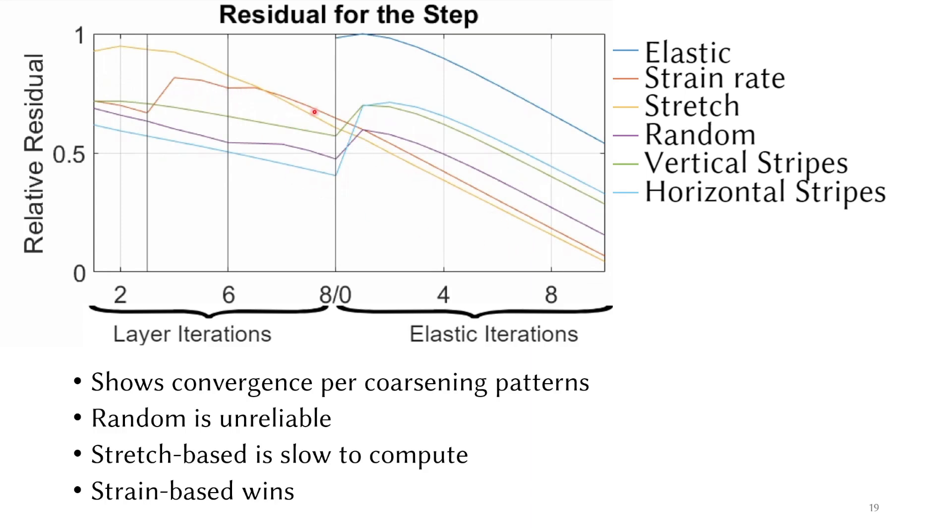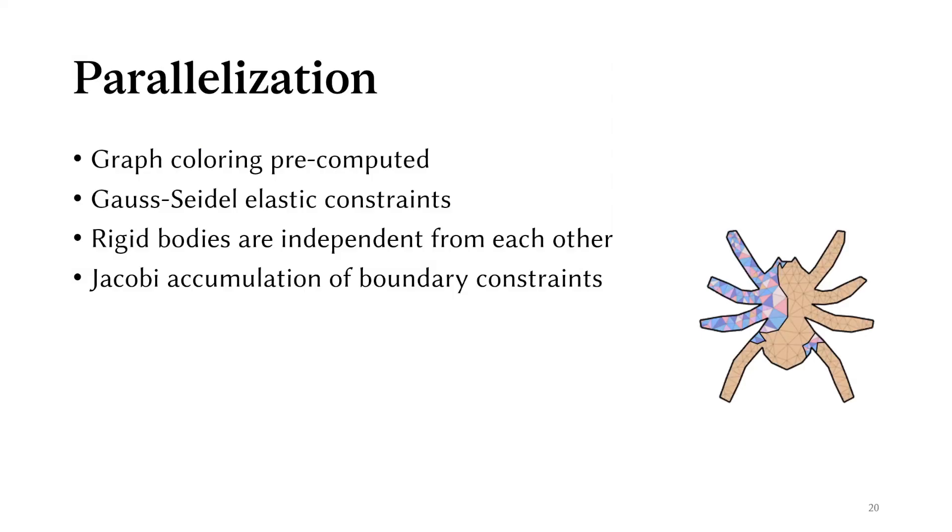But is ultimately slow to compute because it comes from a singular value decomposition. The strain-based pattern is the one that performs similarly to the stretch-based pattern, but is super cheap to compute because it's just a linear pass over all elements.